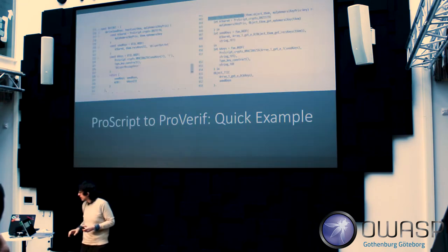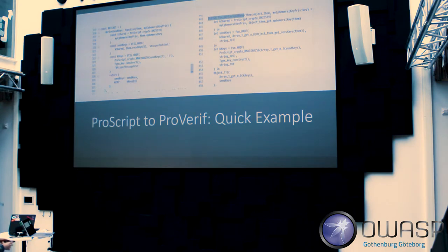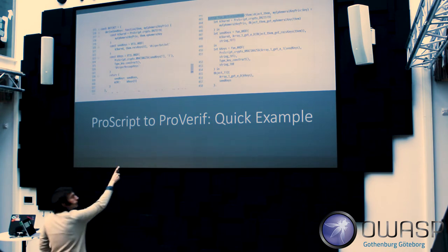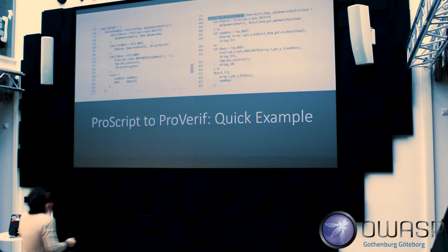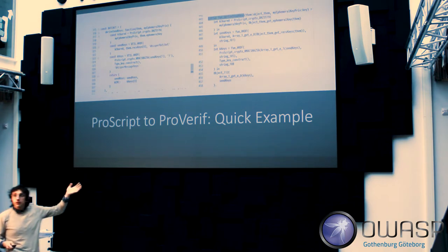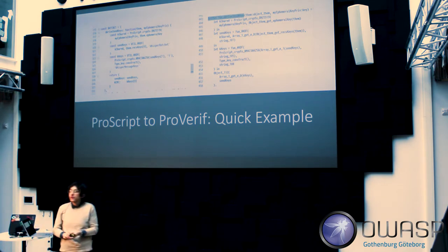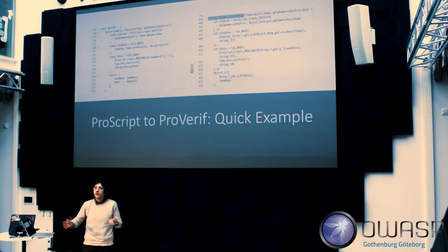ProScript can also detect things like Diffie-Hellman relationships and automatically illustrate them in ProVerif. In ProVerif, you need to explicitly state that G^A^B equals G^B^A — because everything is symbolic, not algebraic. If you don't state it, ProVerif doesn't know it's Diffie-Hellman. ProScript handles that automatically. One important thing: we can translate the protocol code to ProVerif, but we can't automatically generate the top-level execution scenario — that still has to be written by hand.